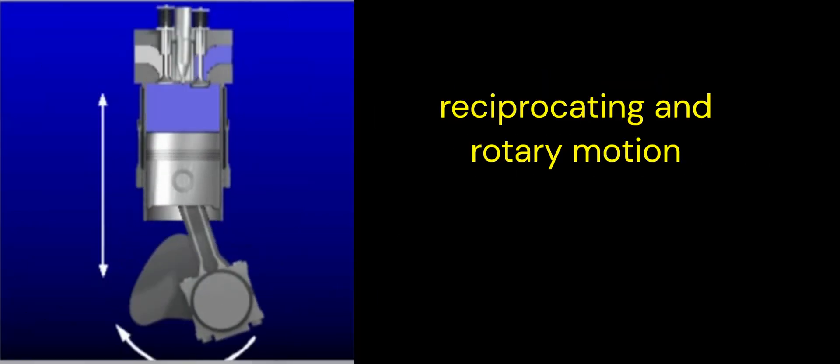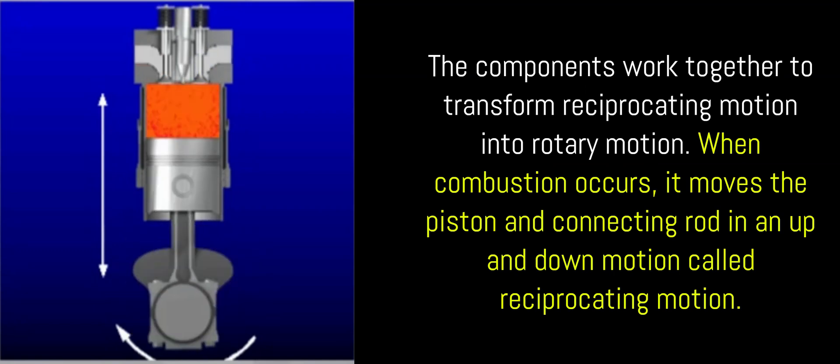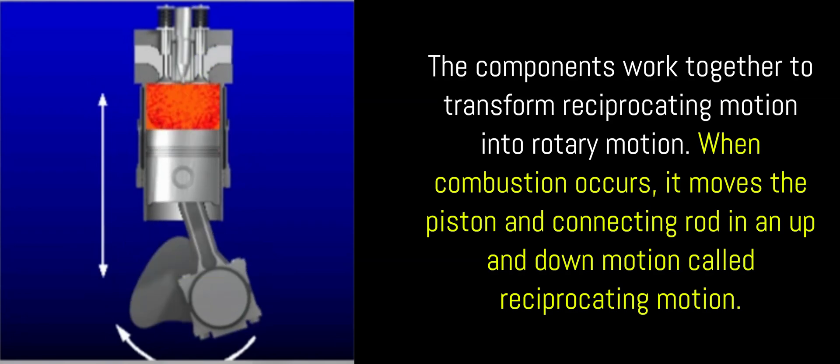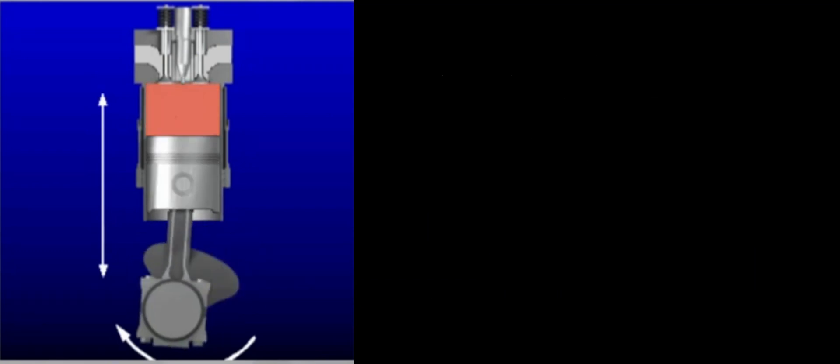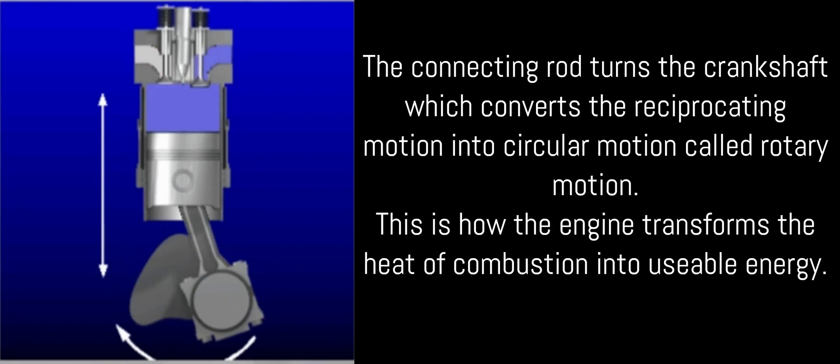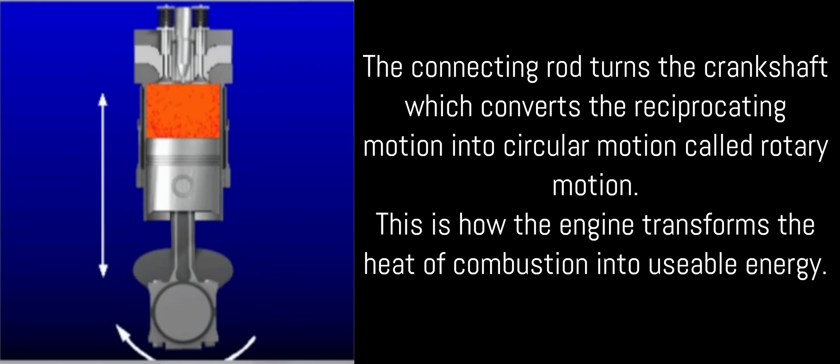Reciprocating and rotary motion: The components work together to transform reciprocating motion into rotary motion. When combustion occurs, it moves the piston and connecting rod in an up and down motion called reciprocating motion. The connecting rod turns the crankshaft, which converts the reciprocating motion into circular motion called rotary motion. This is how the engine transforms the heat of combustion into usable energy.